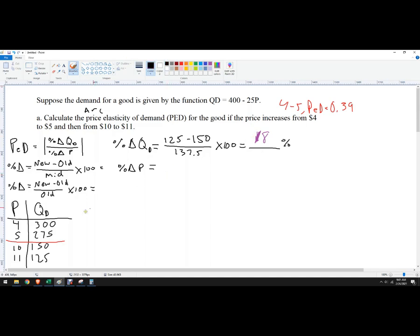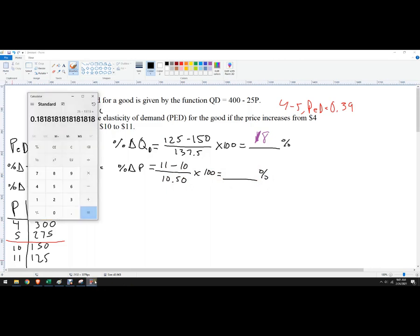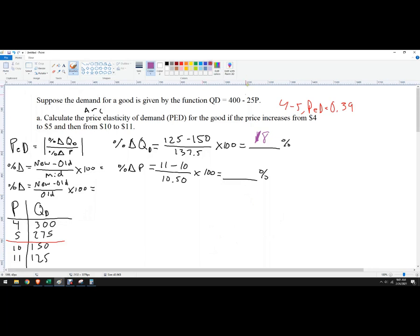Now I want to go 11 minus 10 over the midpoint there, which is 10.50, times 100. So it's just 1 over 10.5. I get 9.5 percent.